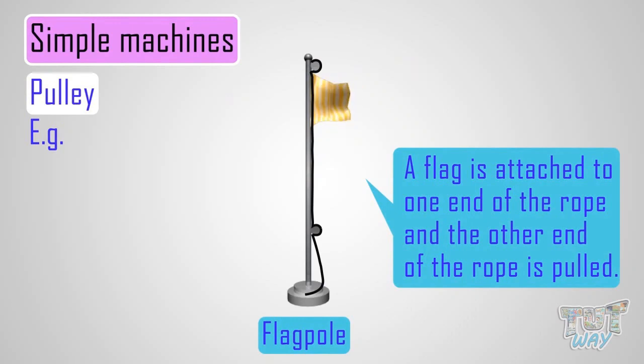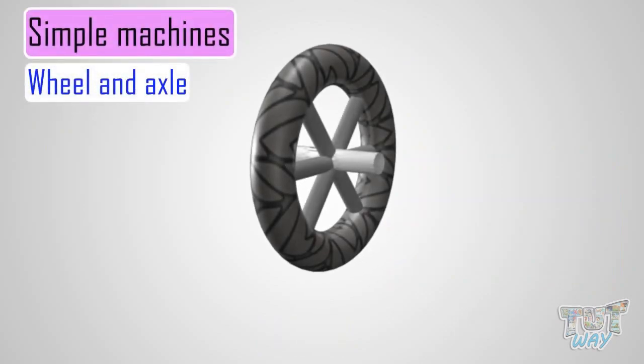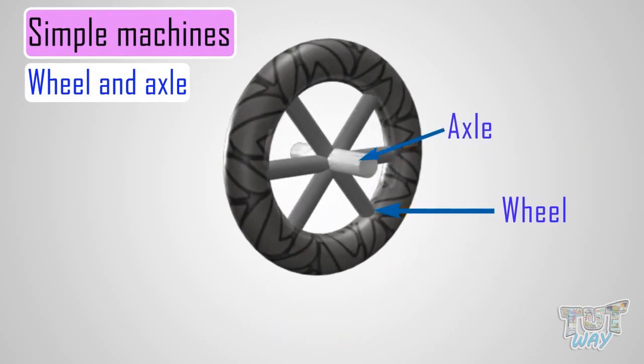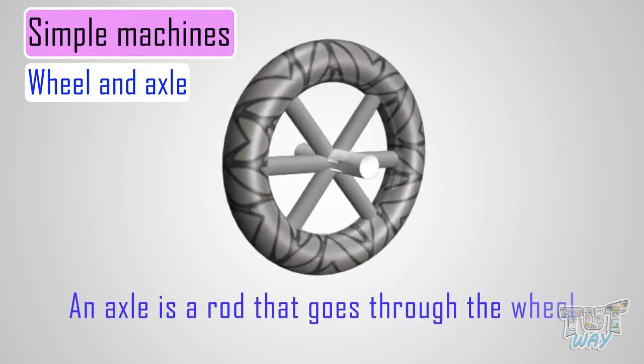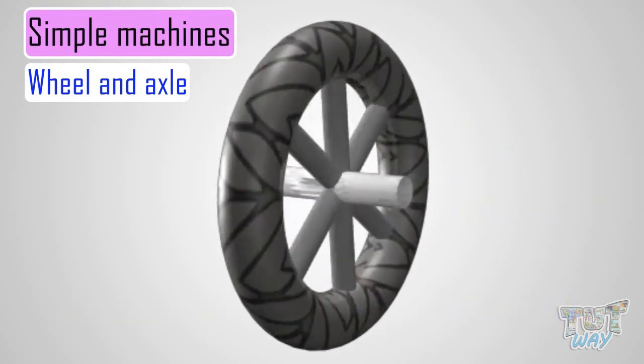Now let's learn about another simple machine, which is a wheel and axle. This is a wheel attached to an axle, and the axle is a rod that goes through the wheel. This lets the wheel turn.